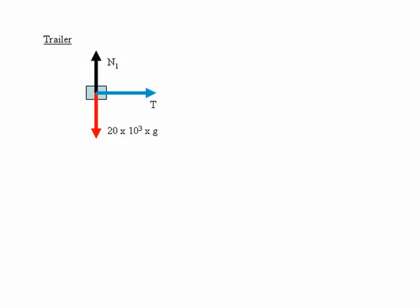Forces acting on the trailer are first of all the force of gravity or the weight acting downwards and vertically upwards there is the normal reaction force N1. In the horizontal direction we have the tension in the tow bar, which I've labelled T.